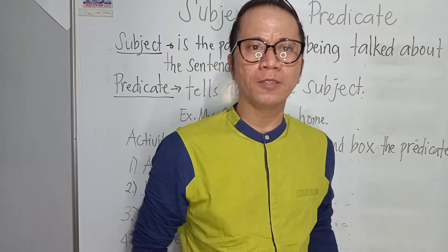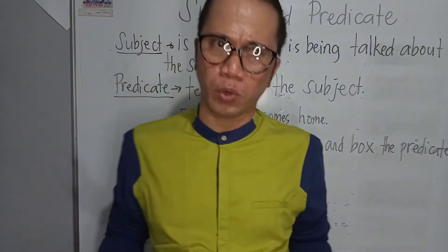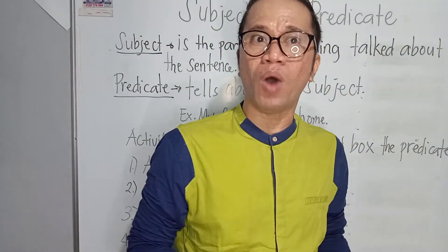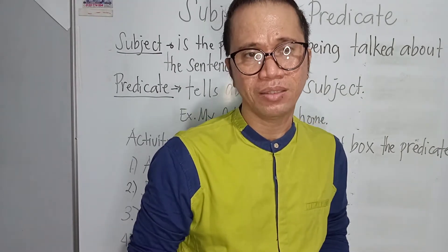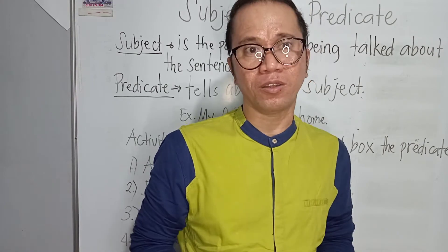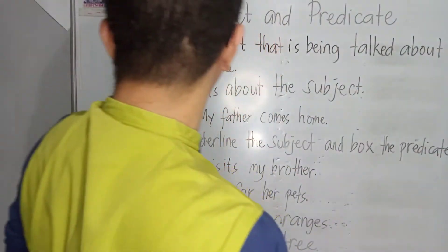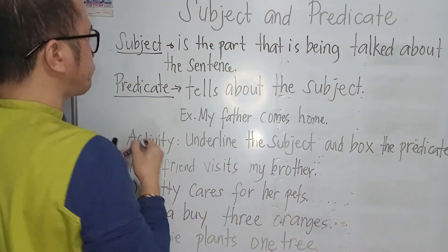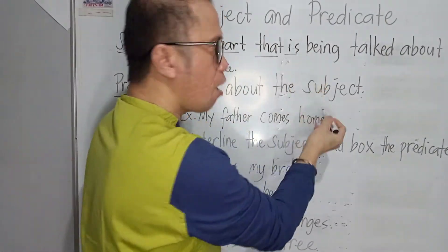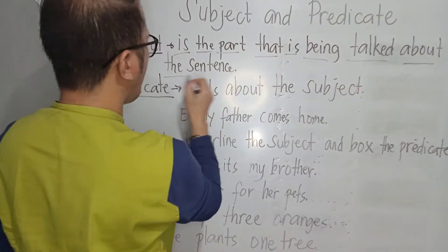Today we are going to discuss about subject and predicate. When we talk about subject and predicate, before we read the definitions, remember that the subject is the one spoken of, or the one acted on. The predicate tells about what the subject does. The subject is the part that is being talked about in the sentence.